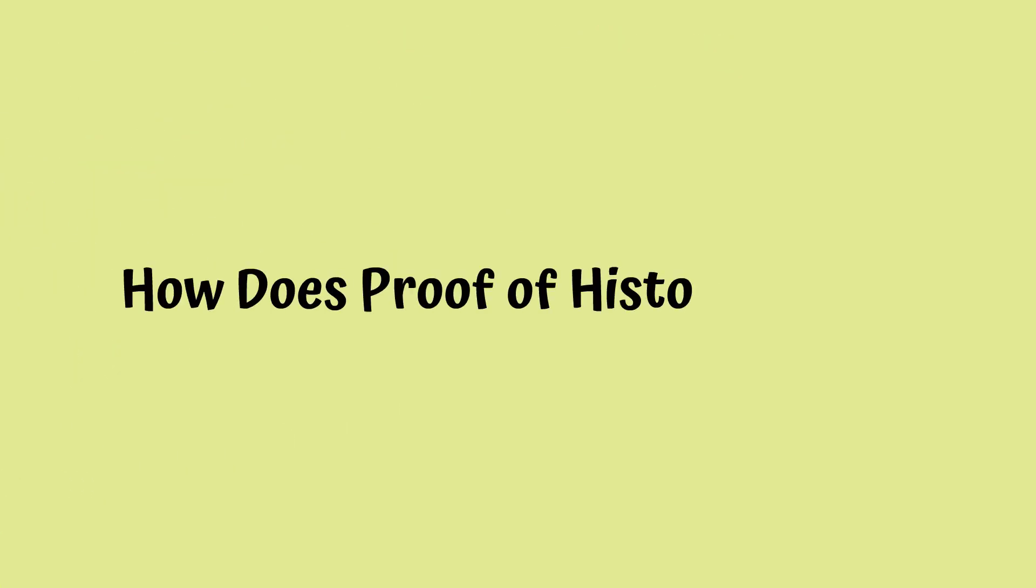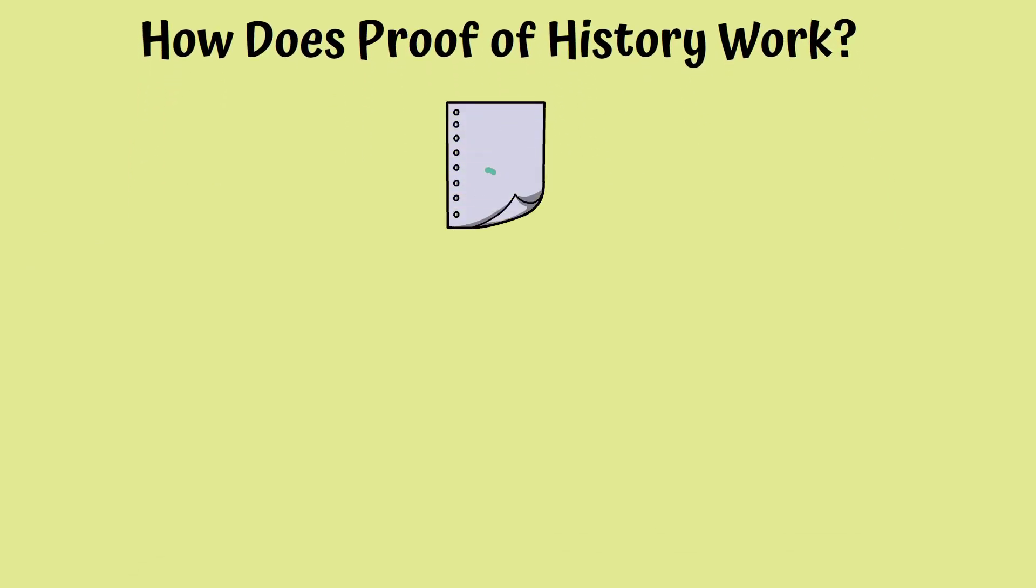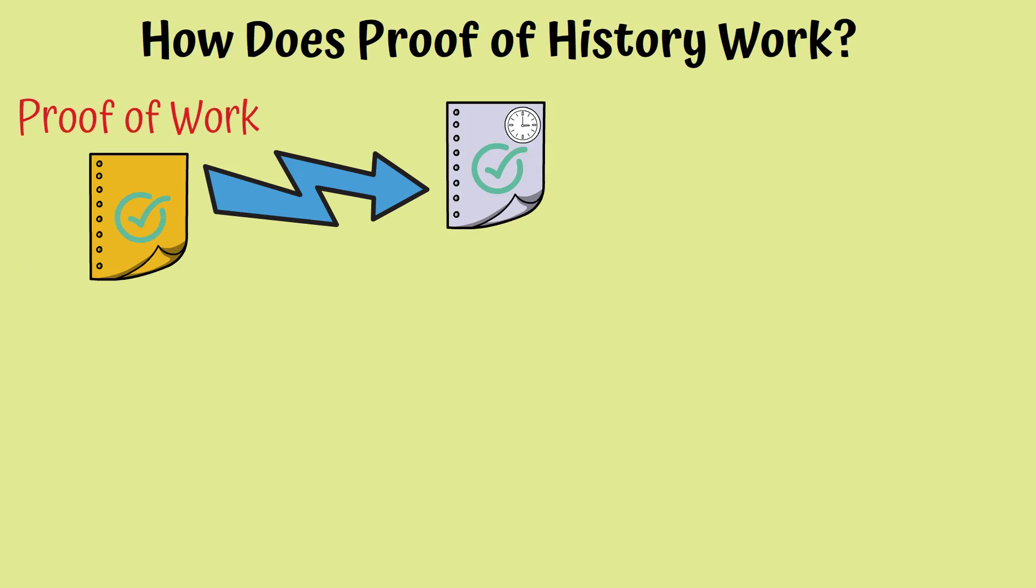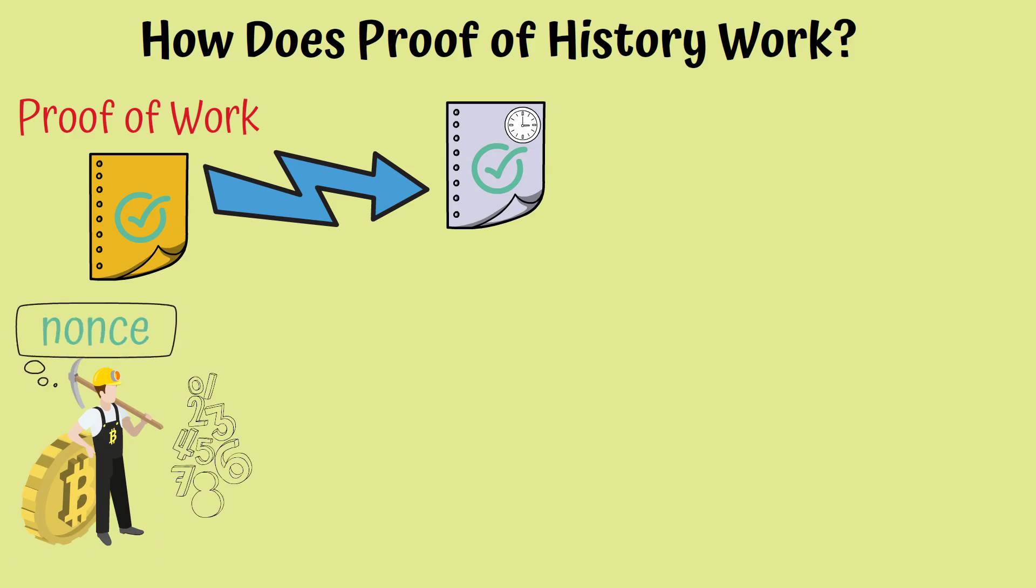How does proof of history work? Proof of history was created as an alternative to proof of work, so let's take a very small detour to see what proof of work is. In a proof of work case, the successful block miner is the first one to find the correct nonce, short for number used only once, representing a whole number used as an input for the computation function of the current block's hash rate, which needs a particular amount of computing power in order to perform.